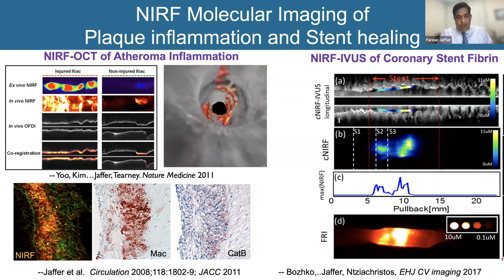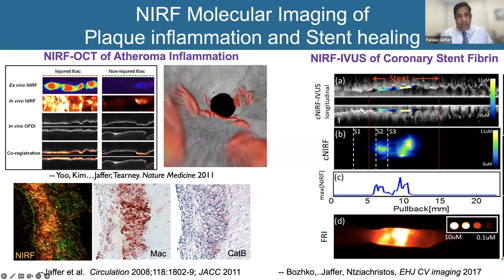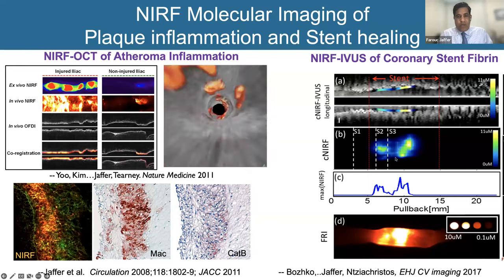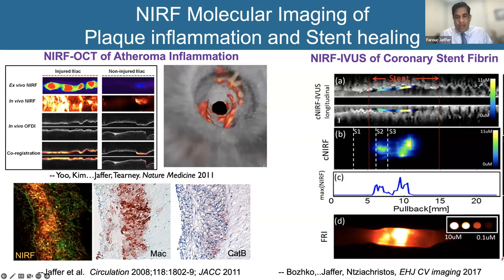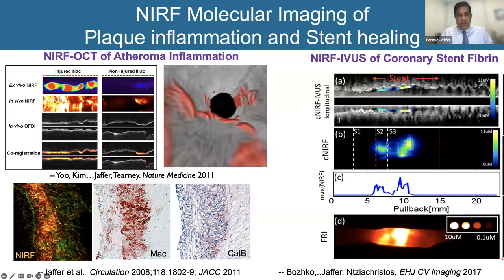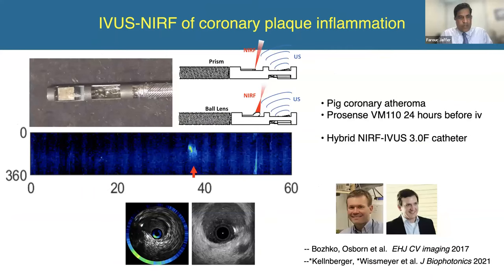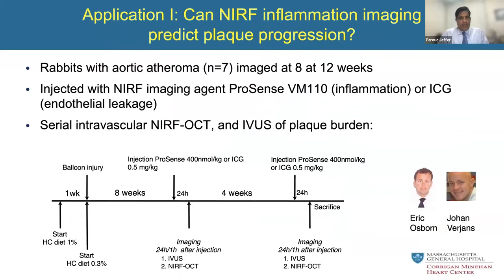The beauty of fluorescence is that we can co-localize our imaging agent with fluorescent markers — for macrophages, for cathepsin B. We can see fibrin on stents that is impossible to see by IVUS alone, as the fluorescent label lights it up. More recently, a streamlined device was used in our pig coronary atheroma model injected with the cathepsin imaging agent, and even with very mild atheroma, there was a strong fluorescent signal indicating protease activation and inflammation in a coronary artery.